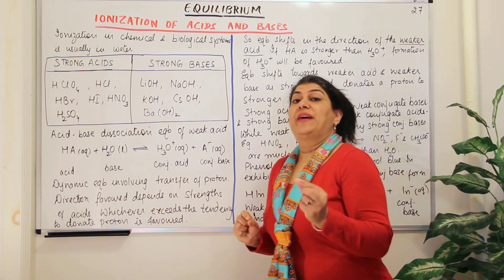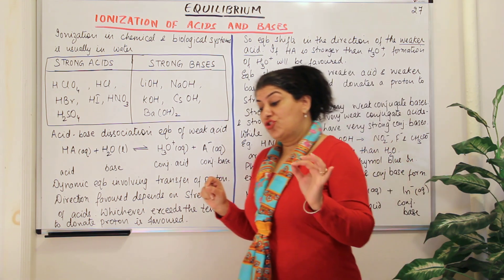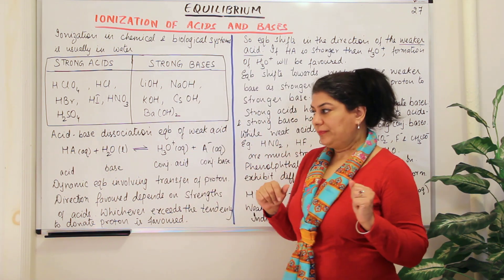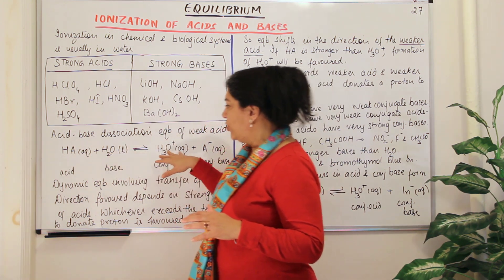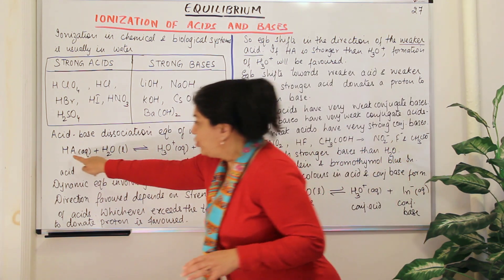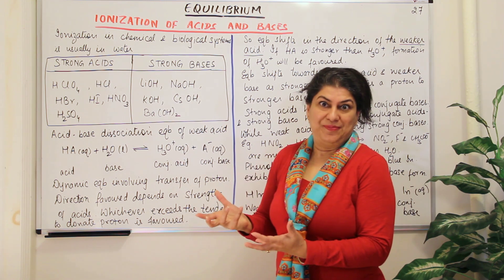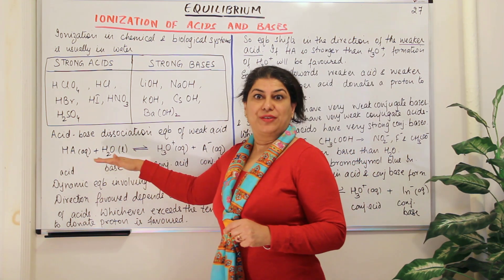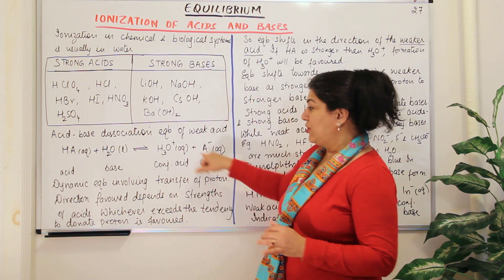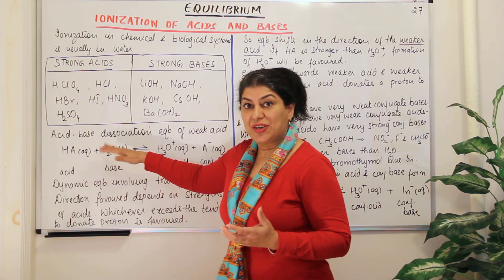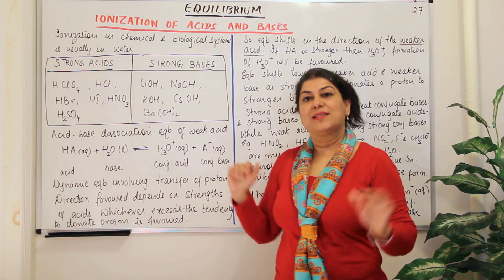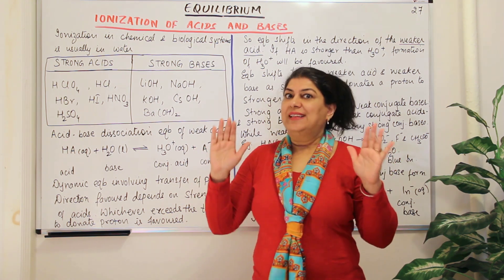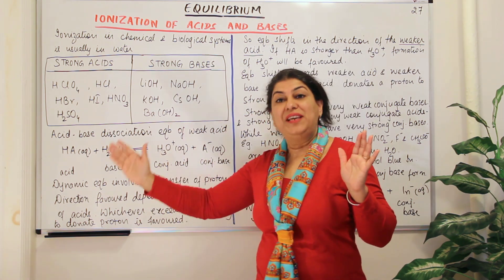Now what decides which direction will be favored? A strong acid produces a weak conjugate base, and a weak acid produces a strong conjugate base. So on the reactant side you have an acid and a base, and on the product side also you have an acid and a base. Out of the two acids, whichever is stronger will dominate and react faster. So if H₃O⁺, the conjugate acid, is stronger, then the reaction in that direction will be favored. And if the conjugate base is stronger, then it would react in the reverse direction. Whichever is stronger — that one will react — meaning the direction of the weaker acid and weaker base will be favored.